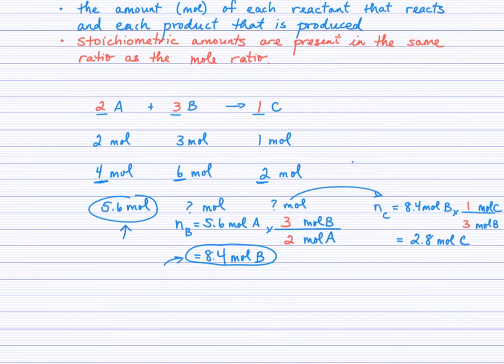And so in the same way that four to six to two is in a ratio equivalent to the mole ratio, two in the equation, two to three to one, so is 5.6 to 8.4 to 2.8. Those are all in the same ratio, two to three to one.